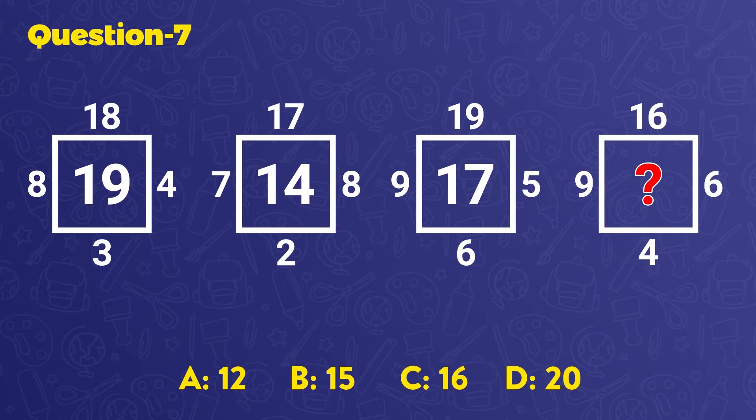We have a different kind of riddle now. There are 4 squares that have numerical values on both the outside and the inside. You should find out the number that will be put into the question mark.